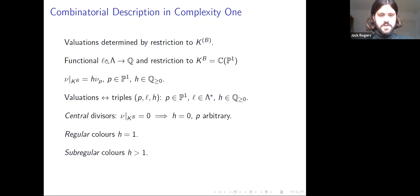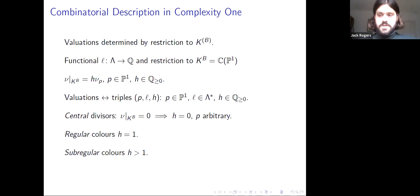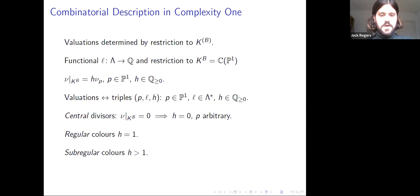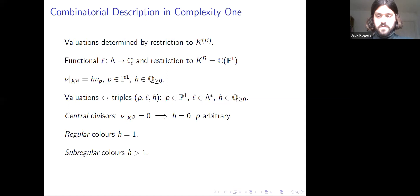Restricting our valuation to the function field of P1 gives a positive scalar multiple of the evaluation at some point in P1. So all valuations of interest correspond to triples (p, l, h), where p is a point in P1, l is a functional on the weight lattice, and h is a positive rational number. Divisors whose restriction to the B-invariant field is trivial are called central (h = 0, p arbitrary). A color is called regular if h = 1, and sub-regular if h > 1.